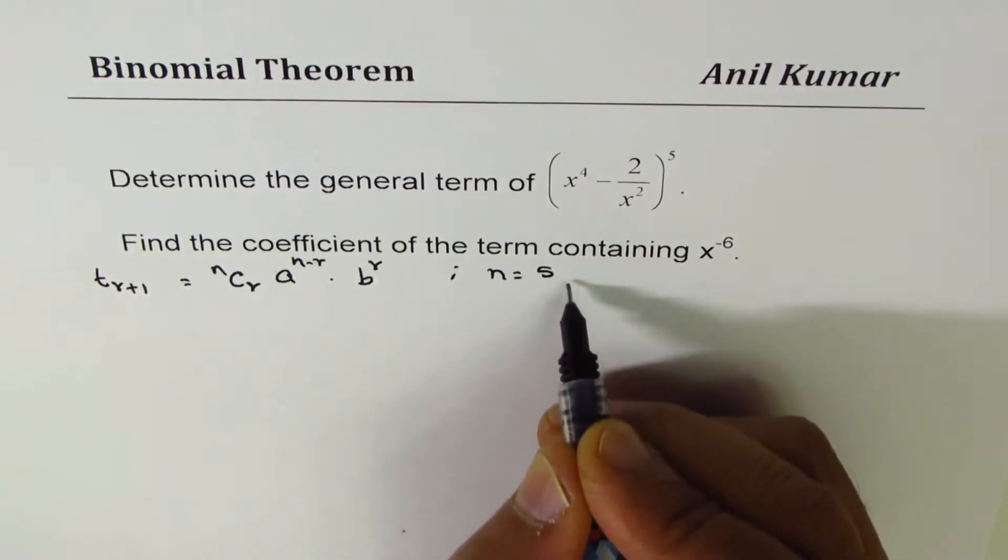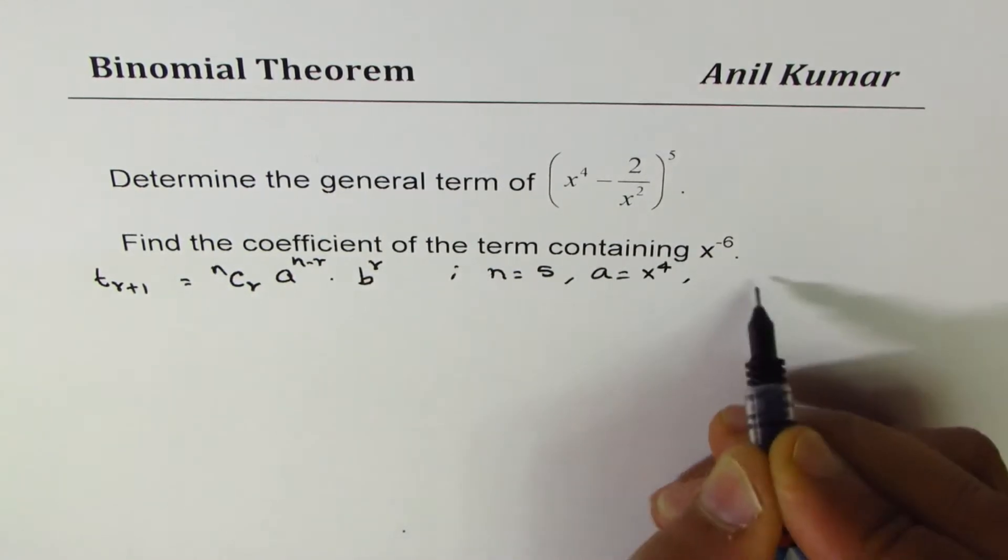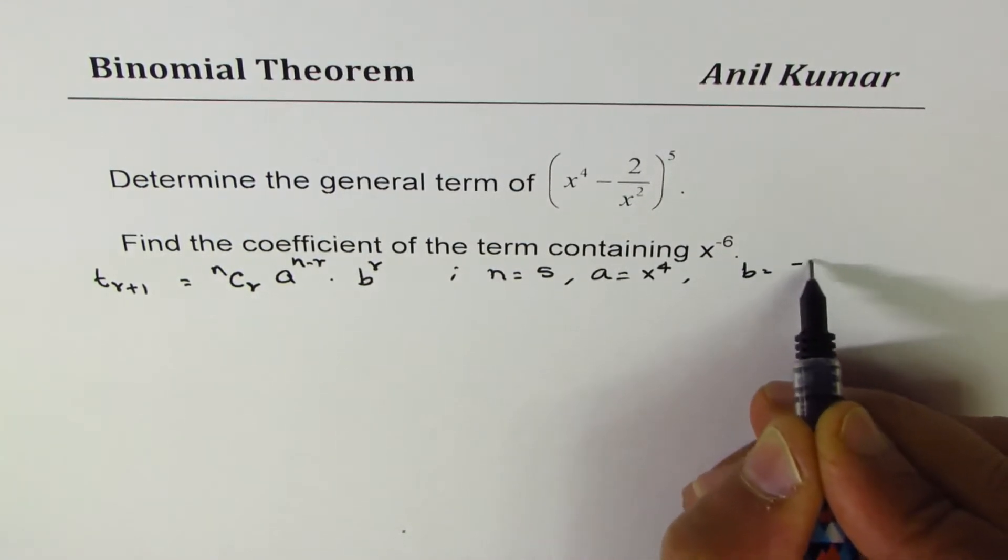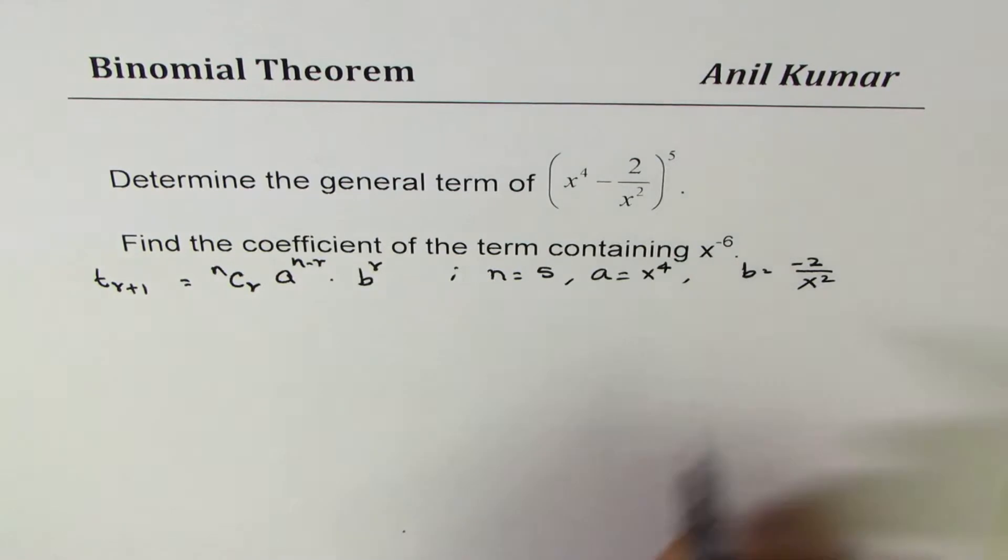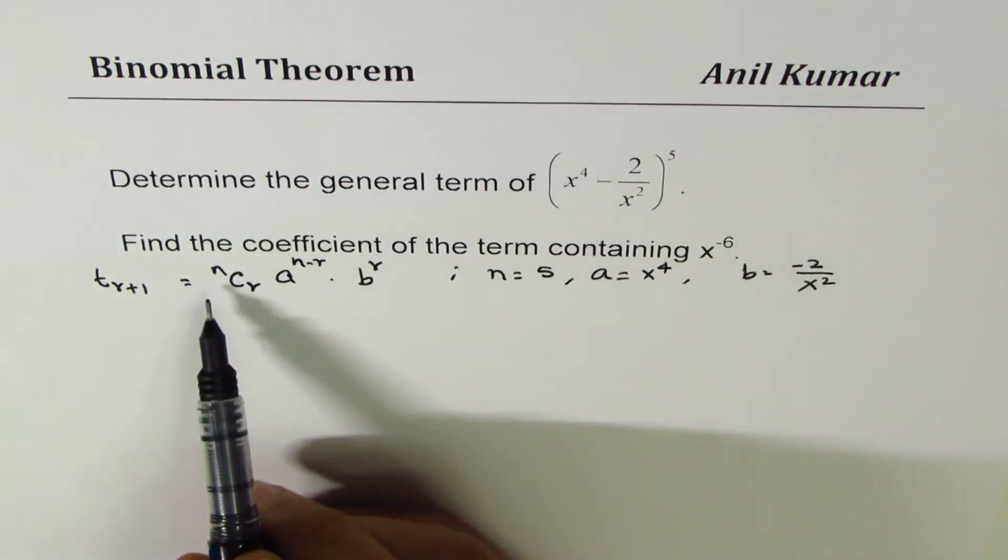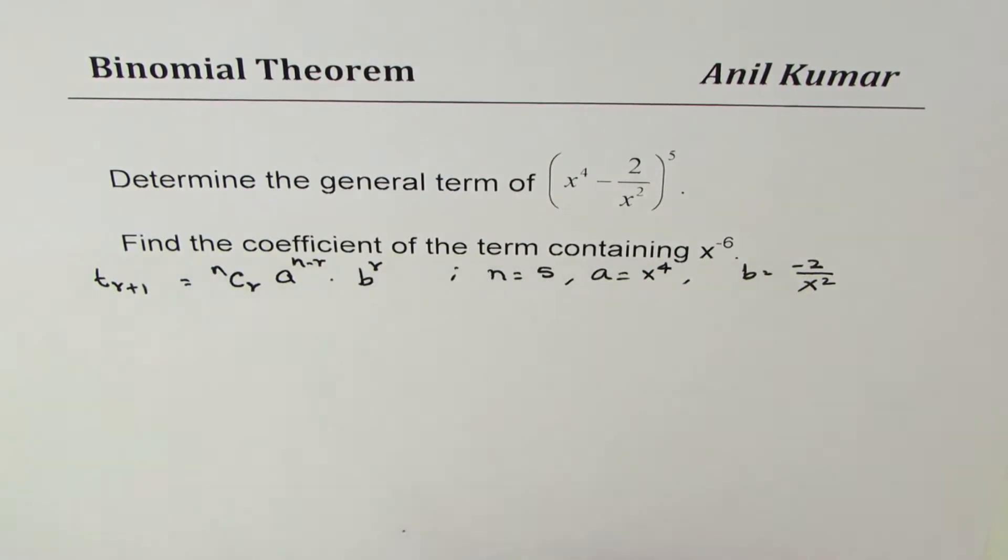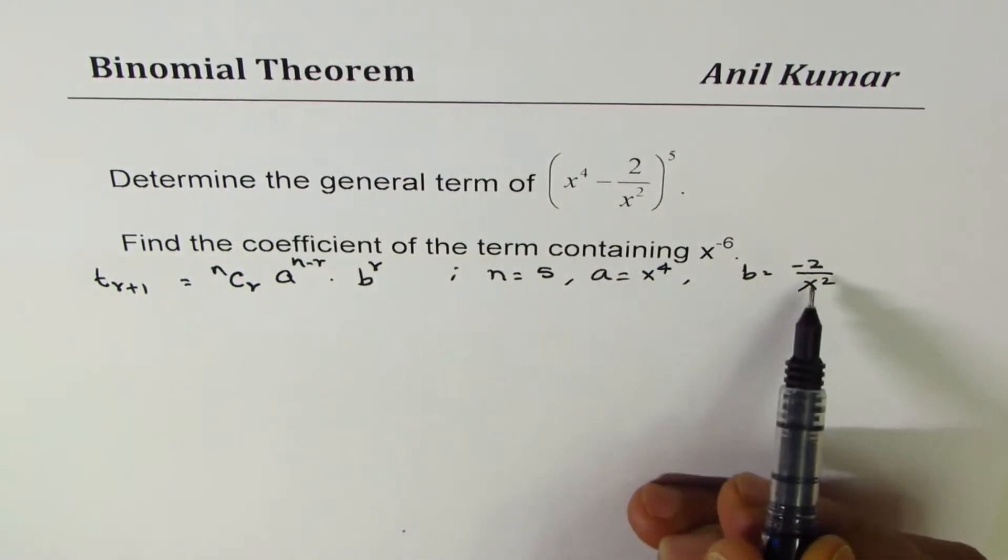And b equals -2/x^2. Now at times when you have a minus, we may write (-1)^r also in the beginning, but if you treat b as a negative number, then it gives you the right results.